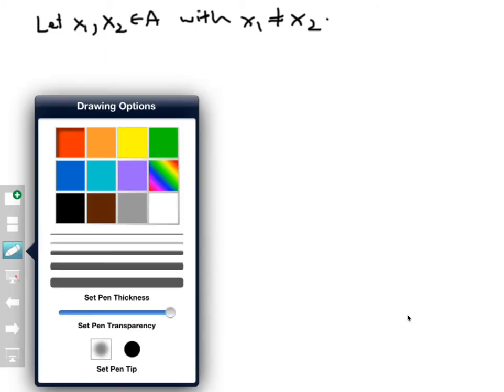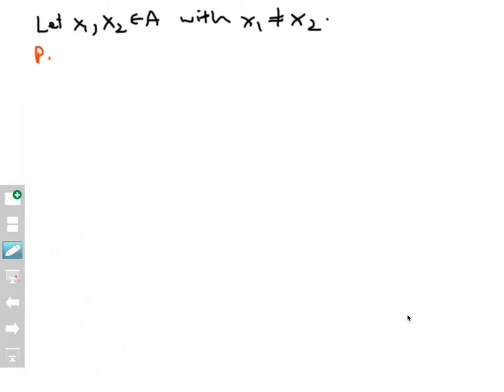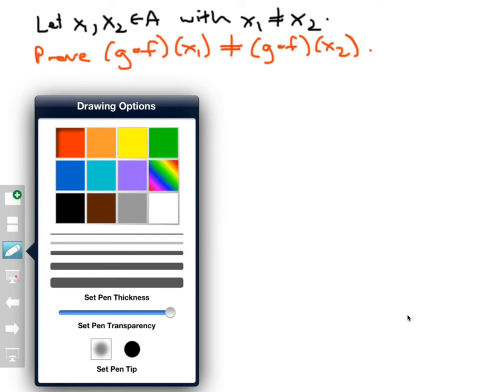And what I want to prove here, I'll put this in red because this is pretty important to remember, I want to prove or show that the outputs are different, and the function here is called g compose f. So g compose f of x1 is different from g compose f of x2. That's my goal there, and I keep that very close by.